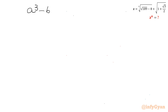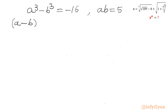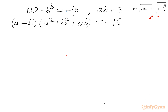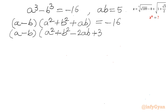Now I will apply the a cubed minus b cubed formula. So I can write: (a minus b) times (a squared plus b squared plus ab) equals negative 16. Now I can rewrite a squared plus b squared as (a minus b) whole square minus 2ab, and then add 3ab, giving (a minus b) times [(a minus b) whole square plus 3ab] equals negative 16.